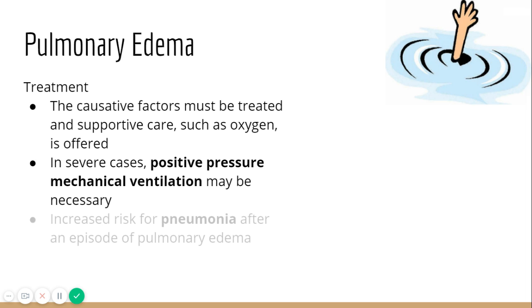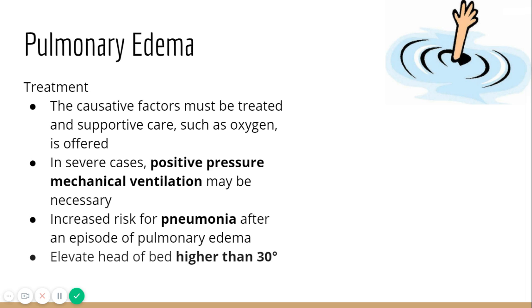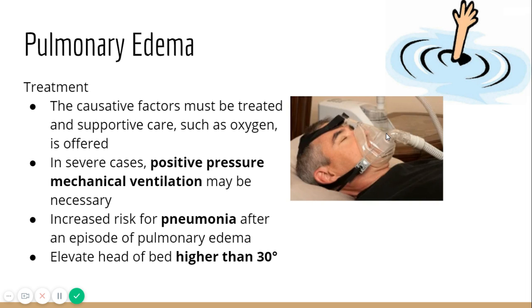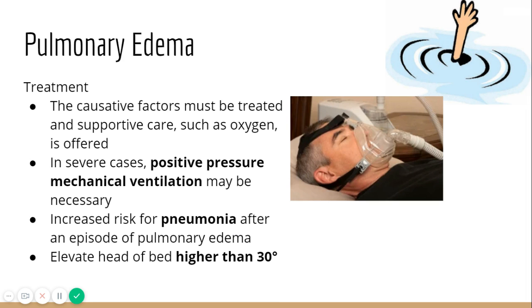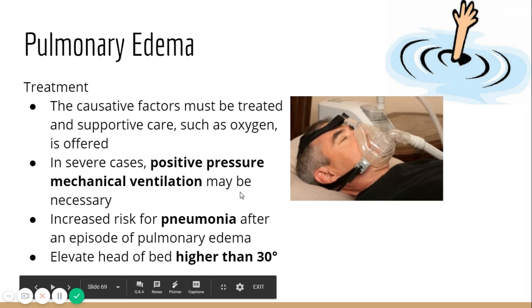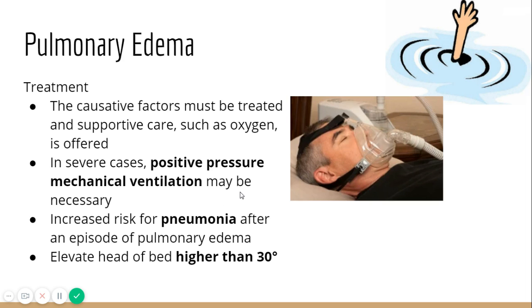In severe cases we use positive pressure mechanical ventilation. With all the fluid in the lungs, their risk for pneumonia is very high. Positive pressure ventilation — such as CPAP or BiPAP — works so that when the patient tries to breathe in, the machine recognizes that and forces air into their lungs. This gets oxygen where it needs to be even when a simple mask or nasal cannula won't suffice. This is also used for individuals with sleep apnea.